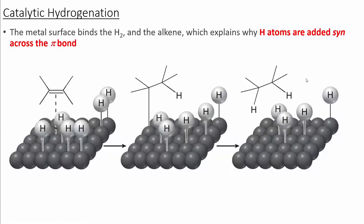The metal surface binds to both the hydrogen molecule and the alkene, and it pulls these two molecules into close proximity of each other. This explains why we obtain the syn addition across the double bond.